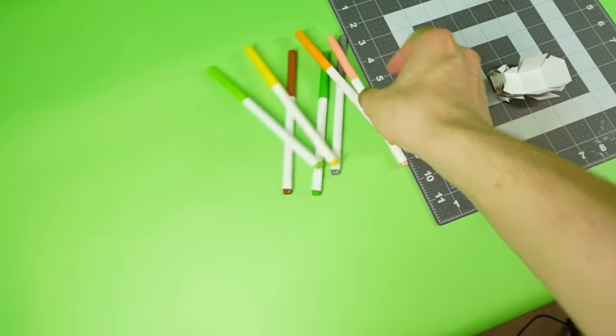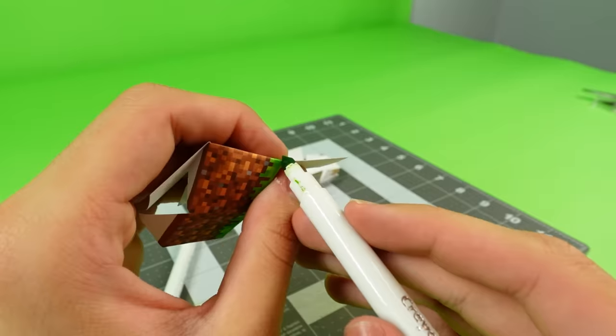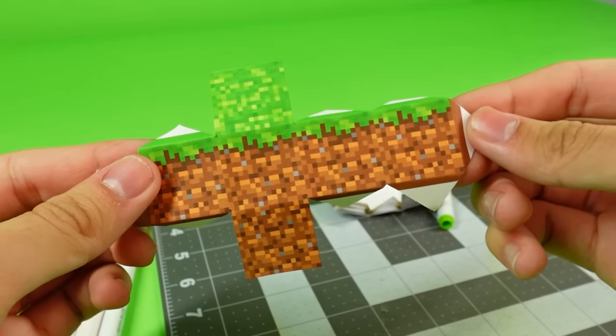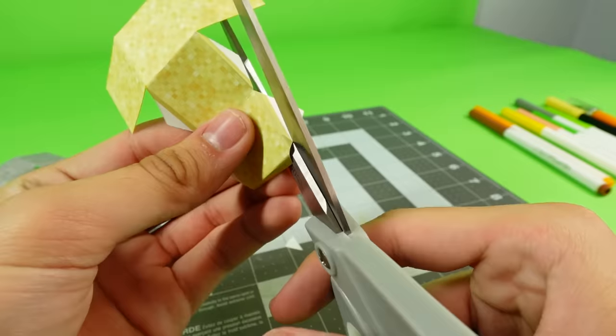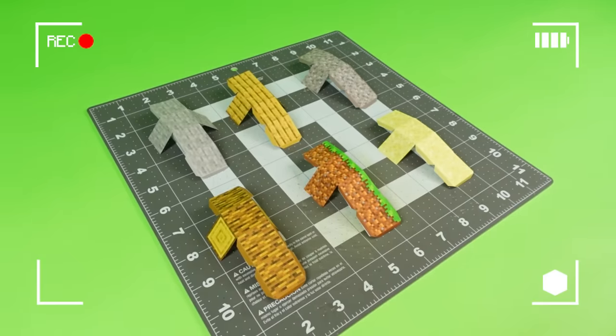Once folded, grab some of those Walmart markers and line each of the sides without flaps with the right color. This is going to turn these blocks from looking like paper to looking like you bought them. Trust me, I've gotten that comment a lot. Now comes the fun part.